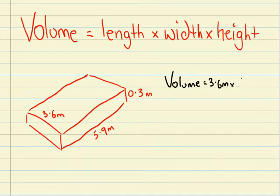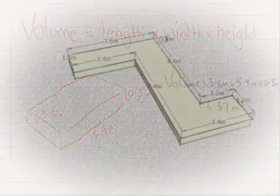So the volume here is going to equal 3.6 metres times 5.9 metres by 0.3 metres which gives us a volume of 6.37 metres cubed.